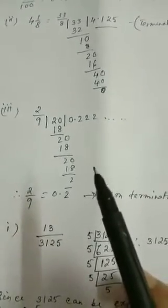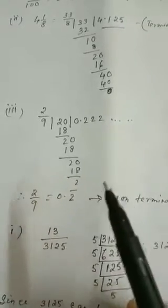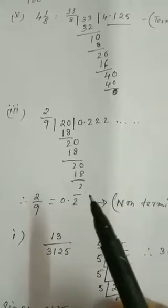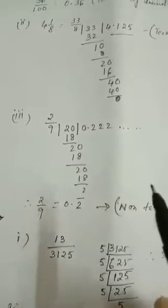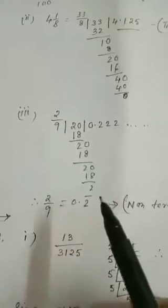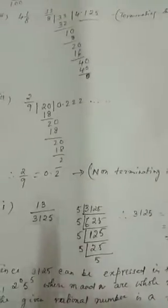If you find that two numbers are repeating, then you can put a bar on both the numbers. And if you find more numbers repeating, then you put a bar or dot on the first number which repeats up to the last number which repeats. So this way you find the second one is a non-terminating recurring decimal, or repeating decimal.